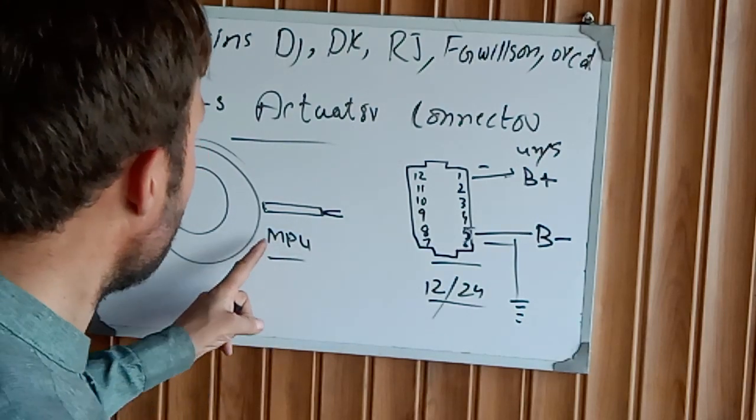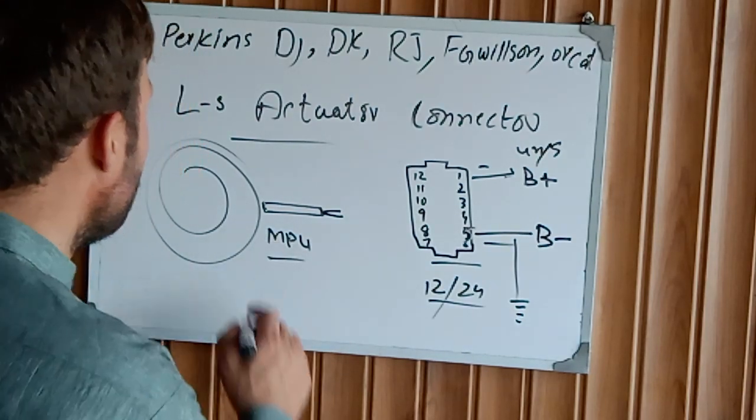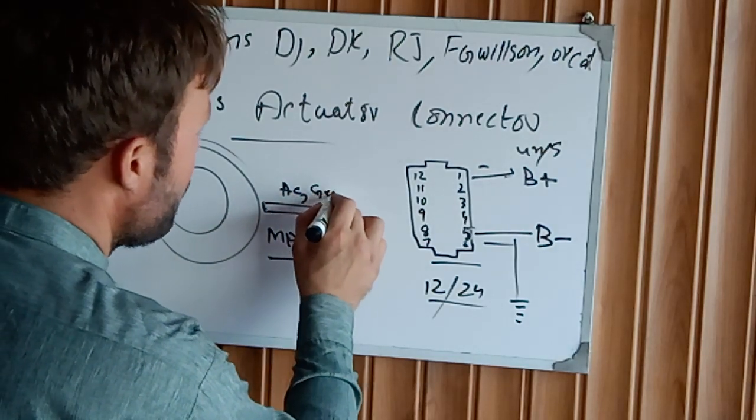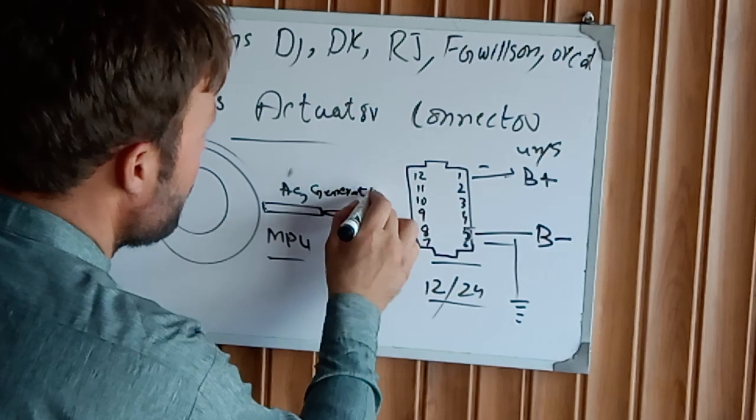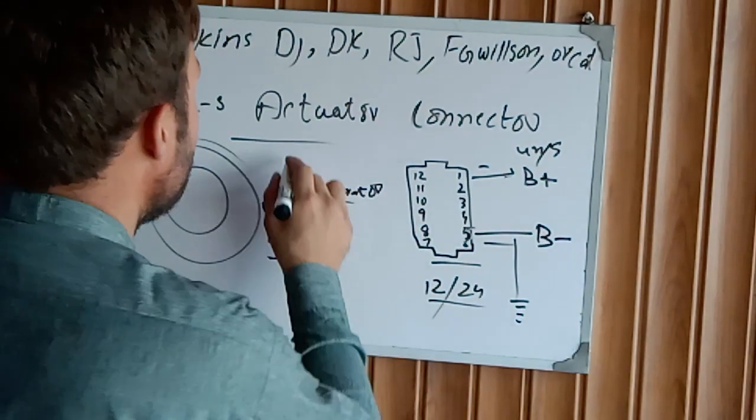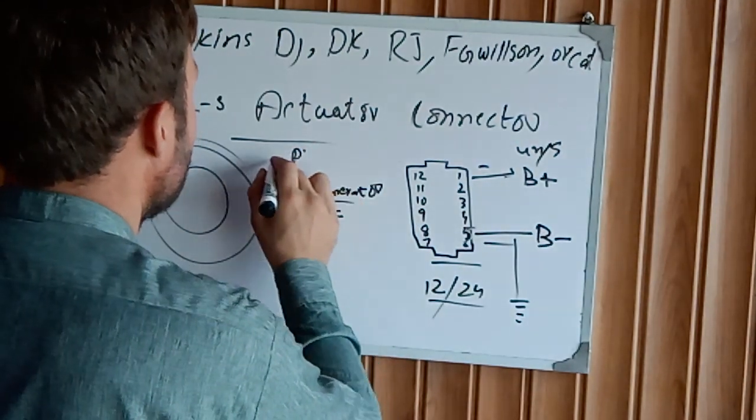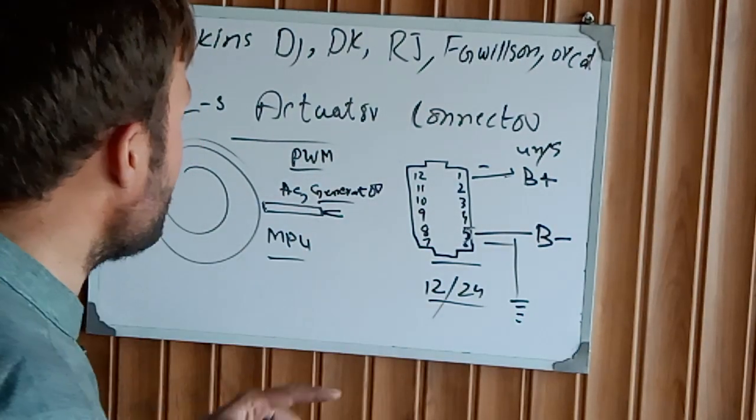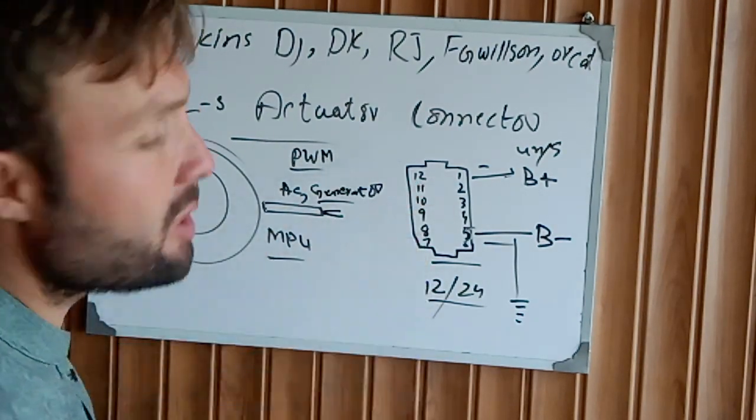The engine flywheel has an MPU mounted on it. MPU stands for Magnetic Pickup Unit, which is a small AC generator. It sends PWM - Pulse Width Modulation signals.